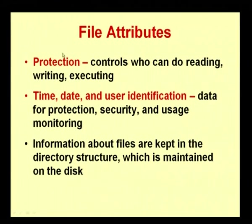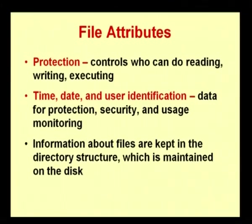The next attribute includes time, date, and user identification — which user saved the file, at what time, at what location, and on what date. All these correspond to file attributes. Information about files is kept in the directory structure maintained on the disk — the hard disk, which is the secondary storage as discussed in earlier lectures.